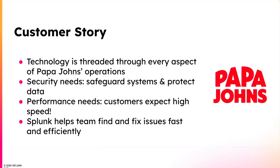Let's talk about a real customer story — specifically Papa John's. We all love a nice slice of pizza. Papa John's satisfies customers' cravings for an exceptional digital experience. Technology is threaded through every aspect of Papa John's operations, from the supply chain and back office to its more than 5,500 stores and all e-commerce and partner channels. This hybrid environment presents a wealth of efficiencies and new customer touch points, but also creates more opportunity for things to go wrong — especially when all these systems must work together seamlessly to get customers their pizzas, their sides, and their desserts.